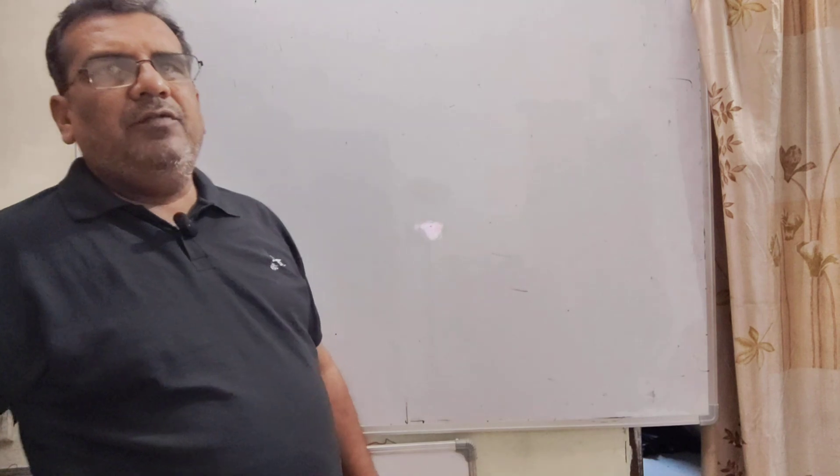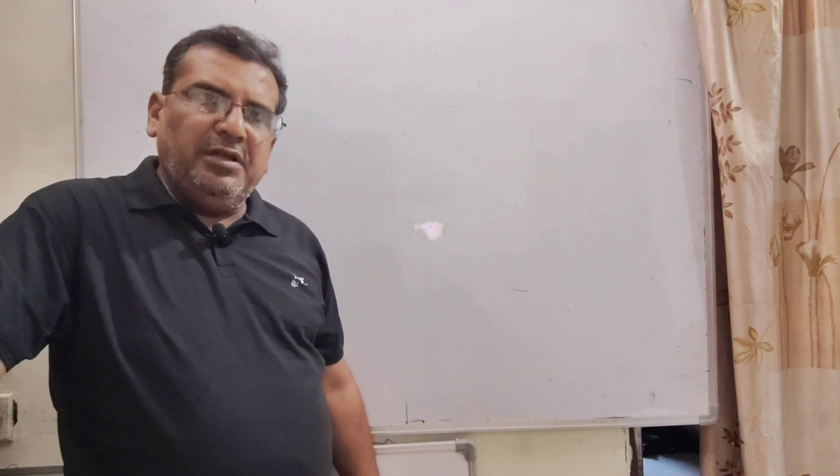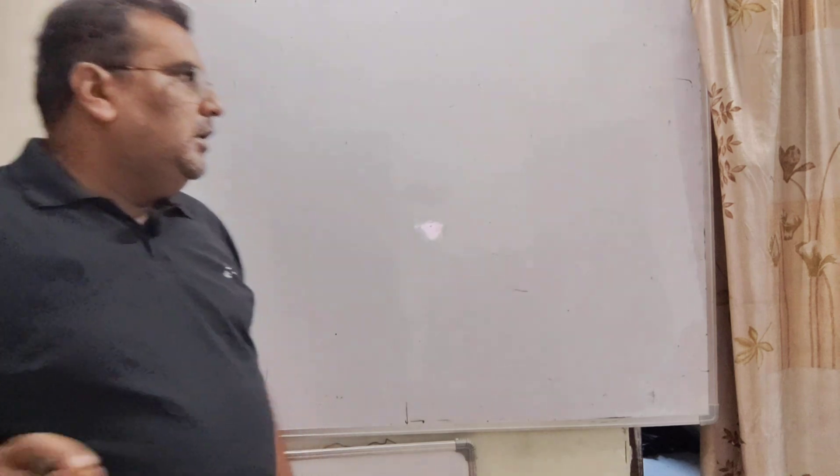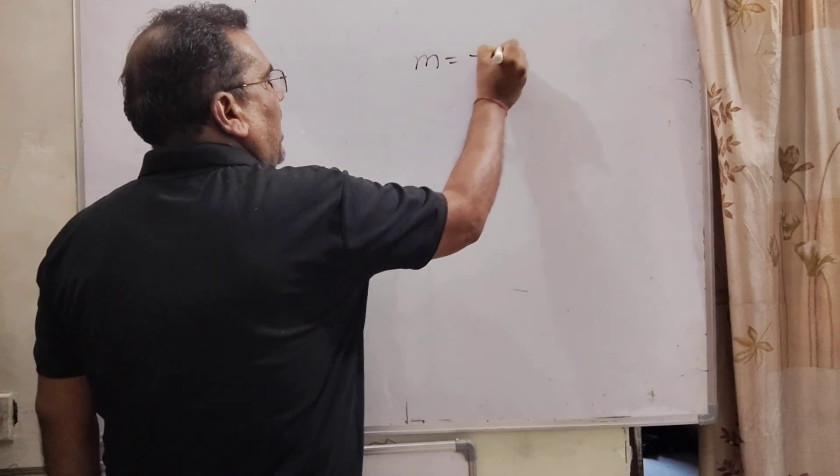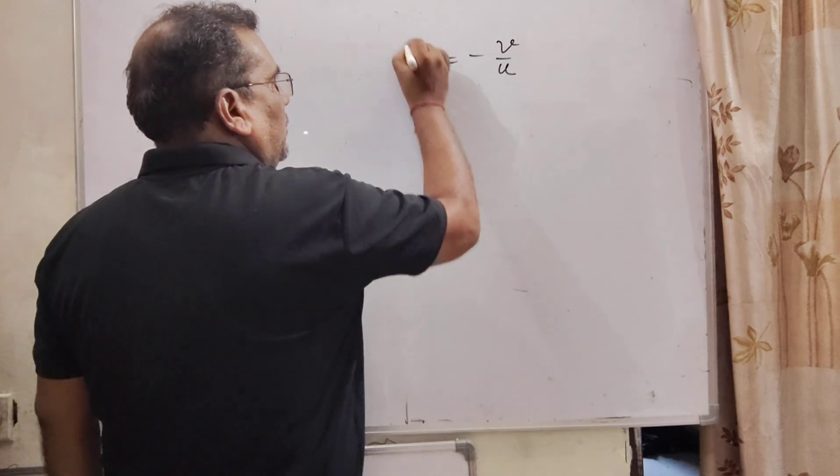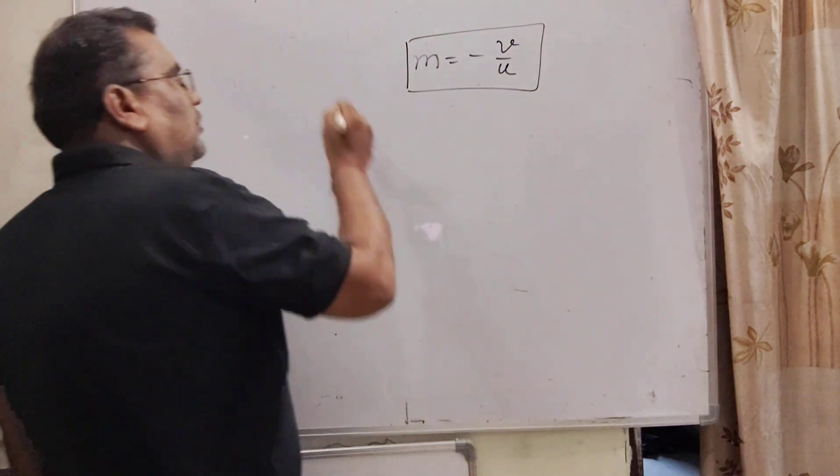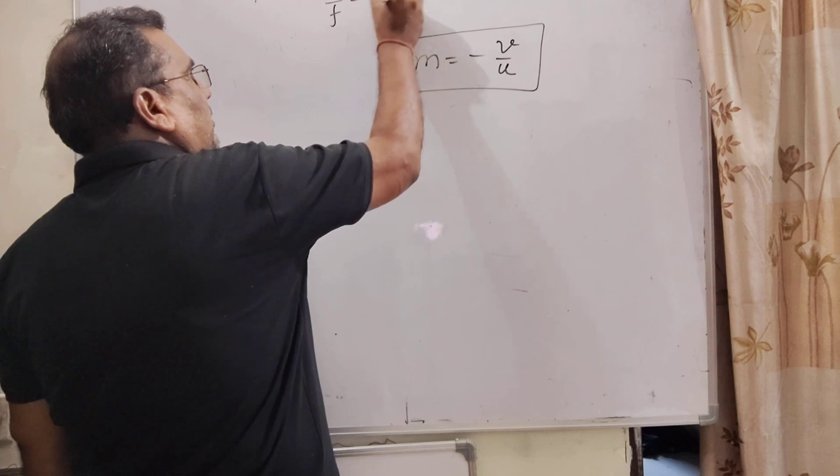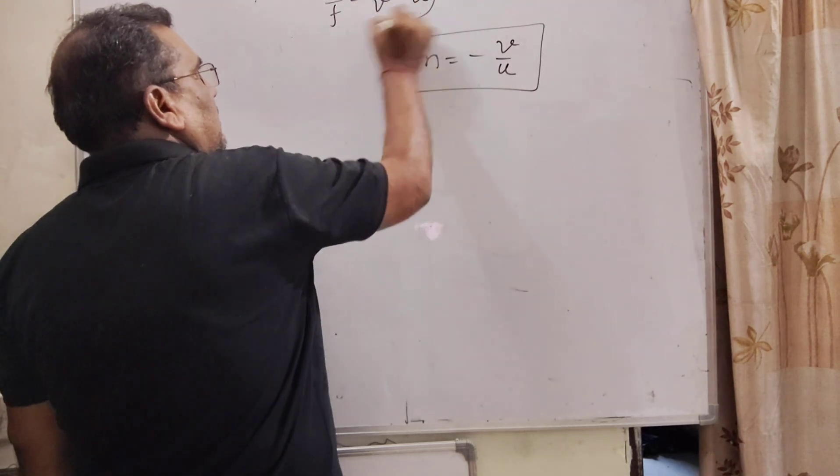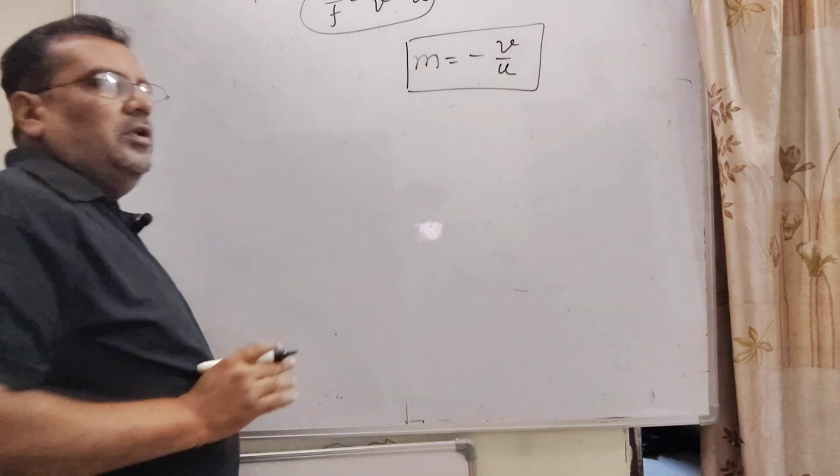To solve this question, we have to use two formulas. First, magnification, and second, mirror formula. Here, the magnification for mirror, we have M equal to minus V by U. And as you know that the mirror formula is 1 by F equal to 1 by V plus 1 by U. So these formulas we have to use to solve this question.